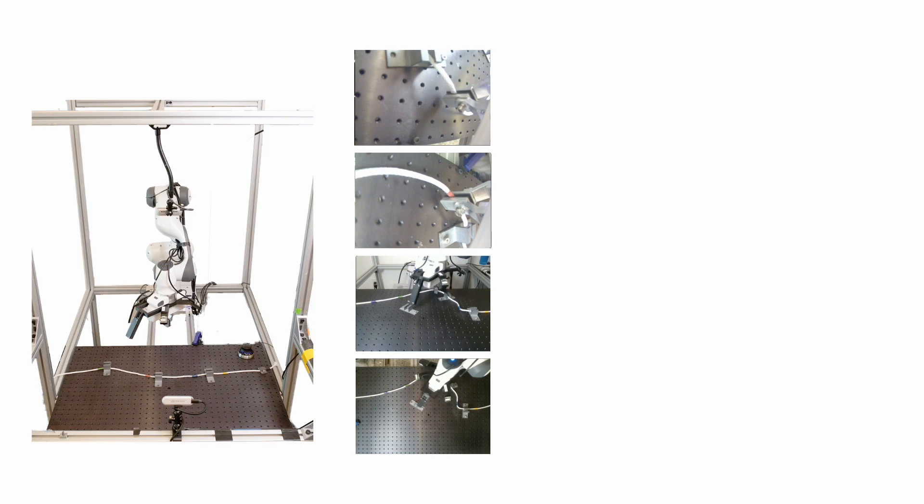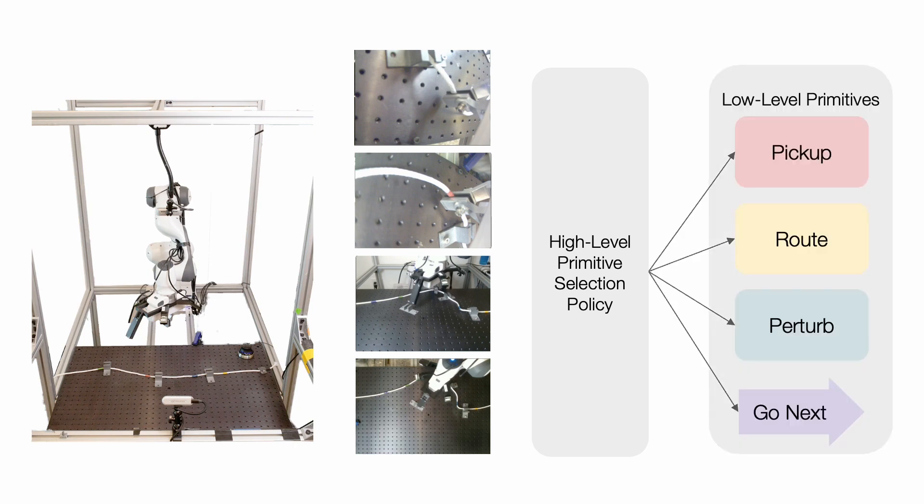Our approach consists of a hierarchical framework where a high-level primitive selection policy is used to compose a combination of learned and scripted low-level primitives sequentially to complete the multi-clip routing task. Our design is modular in terms of the position and the number of clips, as this information is abstracted away from the low-level primitives to ensure generalizability.